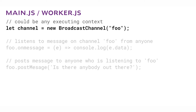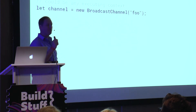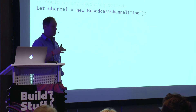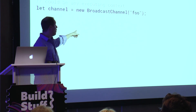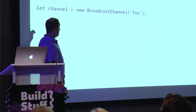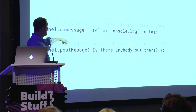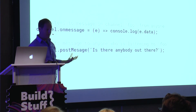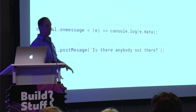Instead of creating a new worker, I create a new BroadcastChannel and give it a name — let's call it 'foo'. I can have multiple different main threads, multiple different pages all executing, and they can all create a broadcast channel called 'foo'. Every single execution context that creates a channel called 'foo' is talking to the same channel. It's more like a pub/sub type thing — I'm listening on the foo channel and posting messages to whoever is listening.